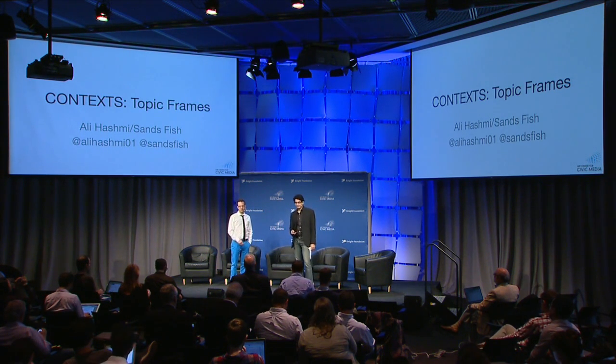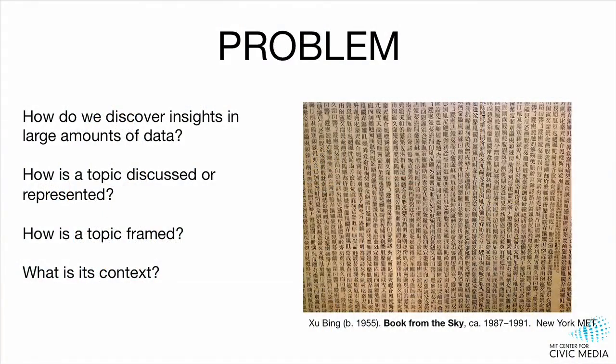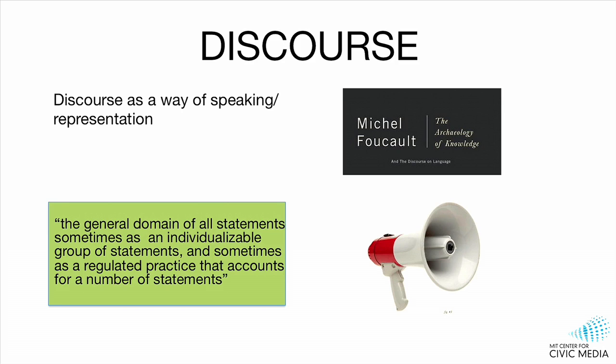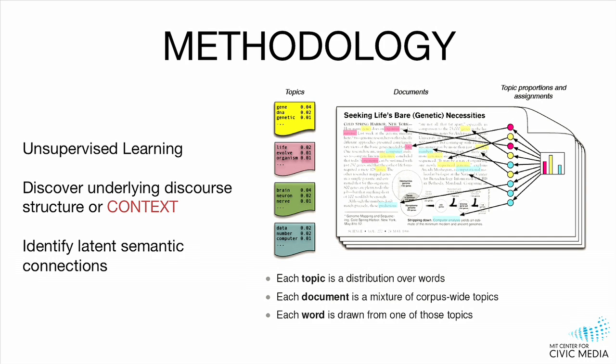In our world, data is ubiquitous and sometimes hard to make sense of — it's like the exhibit Book from the Sky, which remains inaccessible to us without a narrative. Our goal was to provide a narrative insight for large amounts of data in contextual frames comprising keywords. This is a discourse-based approach because it treats media and data as a form of representation. Our algorithm discovers clusters of topics comprising keywords using a noun phrase approach, and the intuition is that we can tease out topical themes through statistical means.